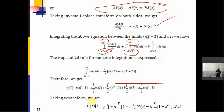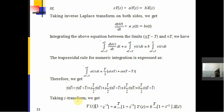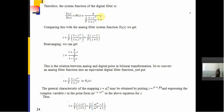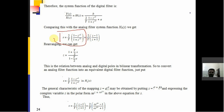Taking the Z-transform, we get: Y(Z)·[1 − Z⁻¹] + A·(T/2)·[1 + Z⁻¹]·Y(Z) = B·(T/2)·[1 + Z⁻¹]·X(Z). Therefore, the system function can be written as B divided by [(2/T)·(1 − Z⁻¹)/(1 + Z⁻¹) + A]. Comparing this with the analog filter system function, we get S = (2/T)·(1 − Z⁻¹)/(1 + Z⁻¹), or equivalently S = (2/T)·(Z − 1)/(Z + 1).